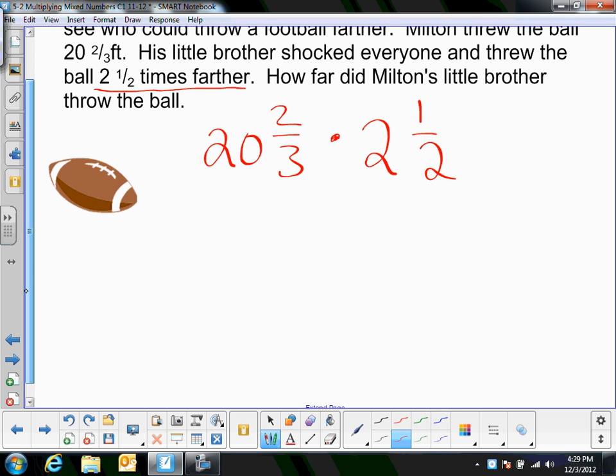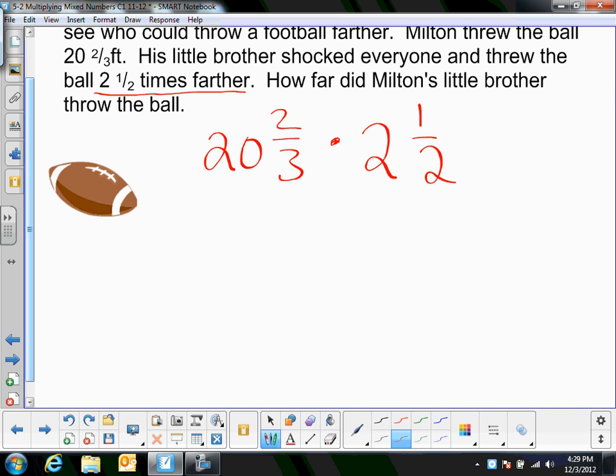And, this is the problem that you're dealing with. And, that will tell you how far Milton's brother threw the ball. Now, go ahead again and you can pause it and try this yourself. Remember, turning it into improper fraction first. So, 20 times 3 plus 2. And, then, 2 times 2 plus 1. You can pause it and try this on your own. So, 20 times 3 is 60. 60 plus 2 is 62. So, I have 62 thirds times 2 times 2 is 4 plus 1 is 5.